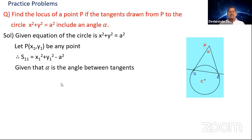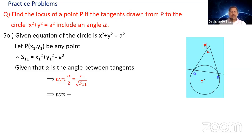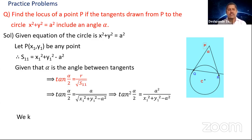Equation of circle: X² + Y² = A². Take the point P as (x₁, y₁) and angle as alpha. S₁₁ = x₁² + y₁² − A². The formula connecting everything is tan(α/2) = R/√S₁₁. So tan(α/2) = A / √(x₁² + y₁² − A²). Squaring both sides: tan²(α/2) = A² / (x₁² + y₁² − A²).